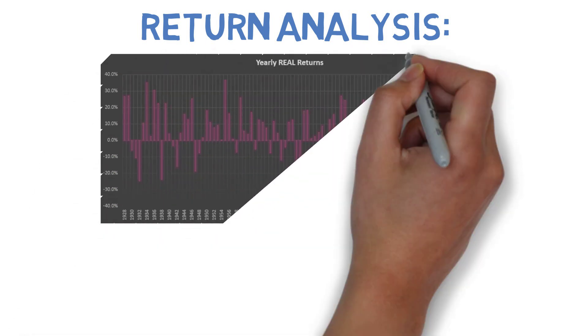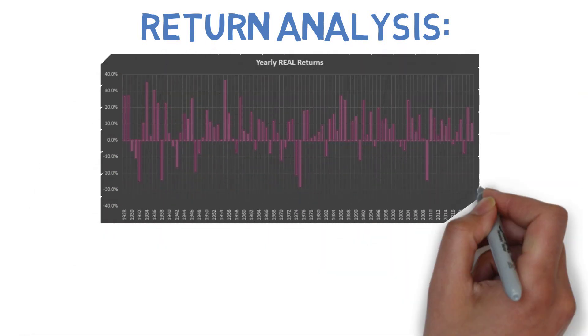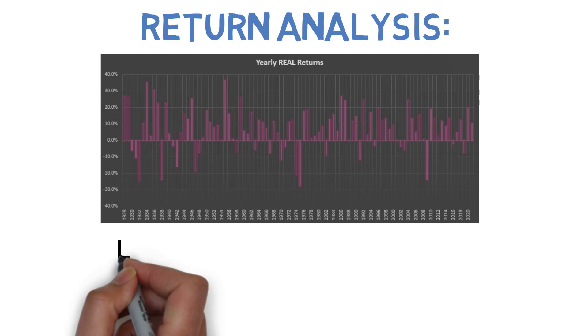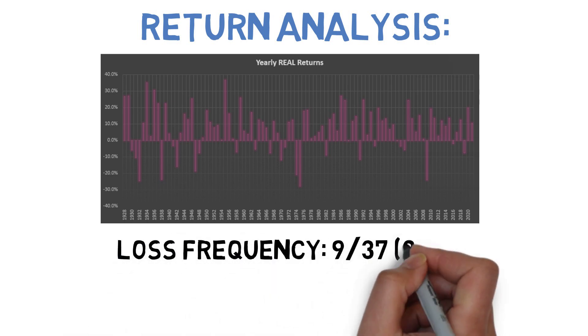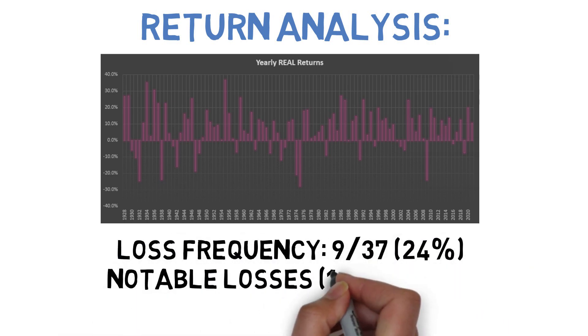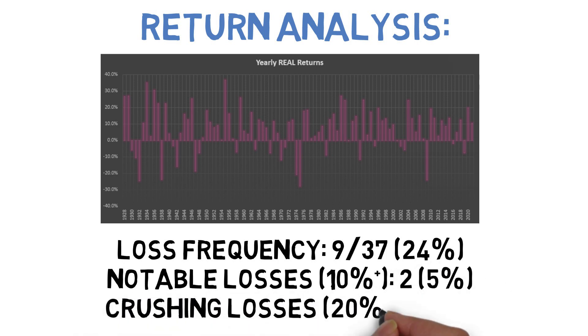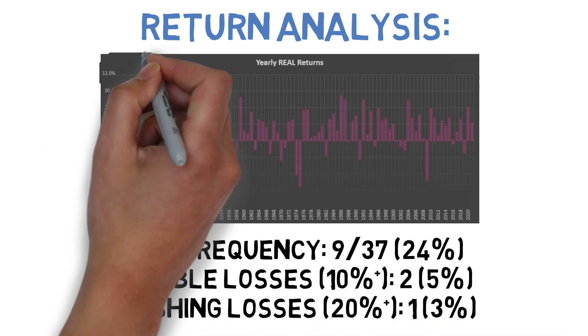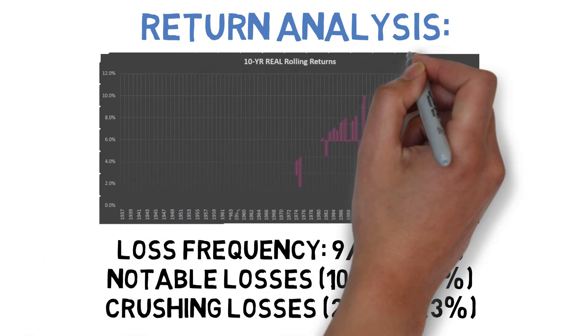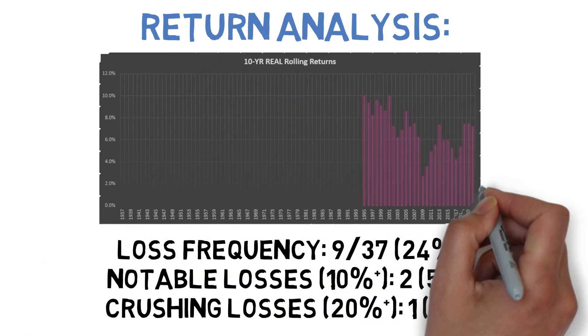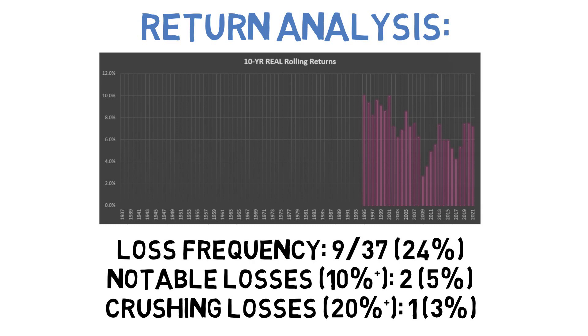There were a total of nine years, out of a possible 37, where the portfolio failed to keep pace with inflation in this sample. That's a loss frequency of around 24%. Of those losses, two fell by at least 10% and one by at least 20%. Thankfully most of those downturns were recovered from relatively quickly, as there wasn't a single 10-year stretch where the strategy failed to keep pace with inflation. The closest it came was to 10 years between 1999 and 2009, where it beat inflation by 2.6% per year. And that was the only stretch that failed to beat inflation by at least 3.5% per year over any given 10-year period in this sample. So all in all, pretty good.